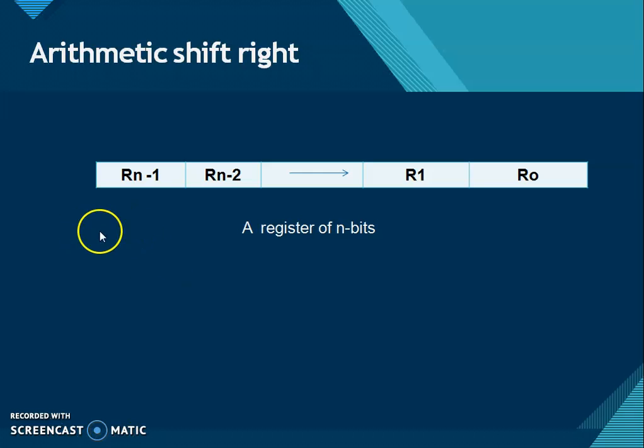So suppose this is an n-bit register and Rn-1 is the most significant bit that contains the sign of the number also, and R0 is the least significant bit. And we have to perform arithmetic shift right on this n-bit register.